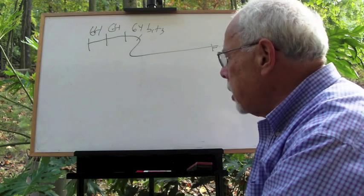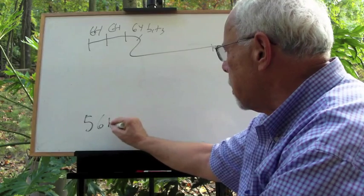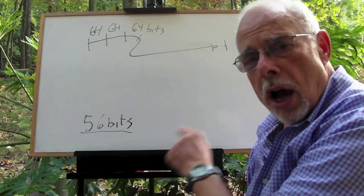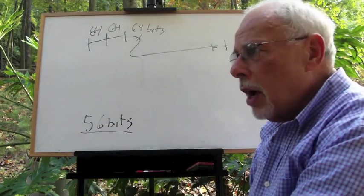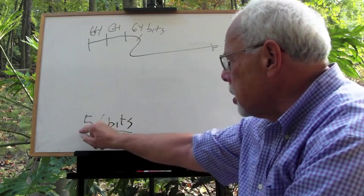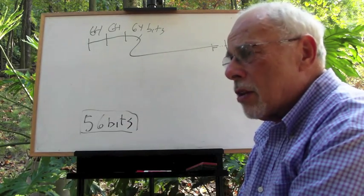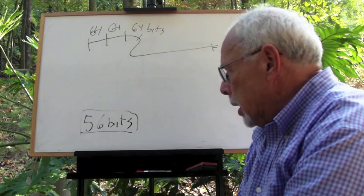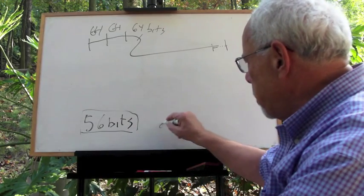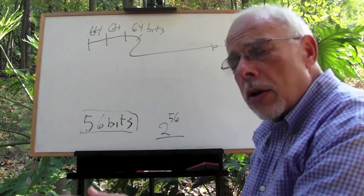Then you pick a key. A key is 56 bits that are to remain secret. The entire efficacy of DES is based on the assumption that you can keep those 56 bits secret. The idea of why 56 is that if you have 56 bits, you have 2 to the 56, which is a huge number of possible keys.